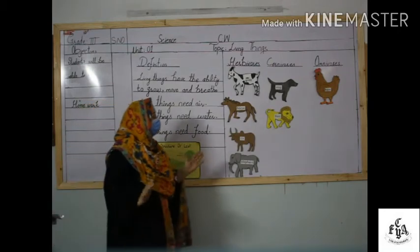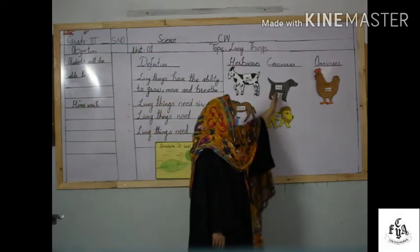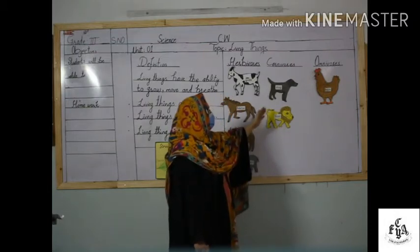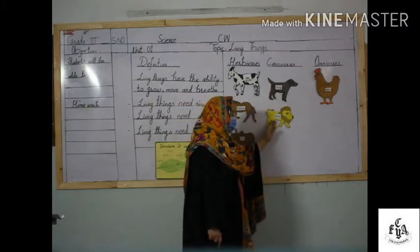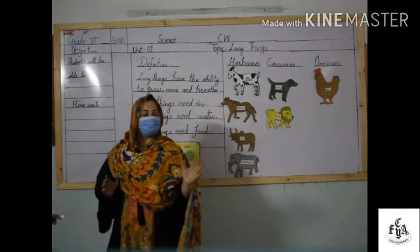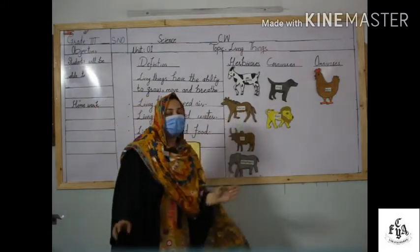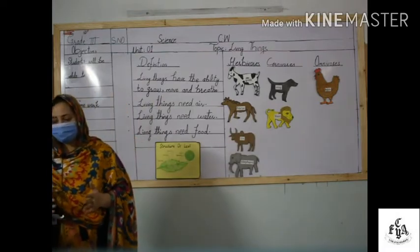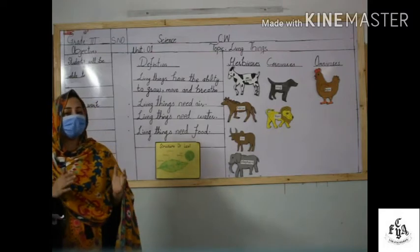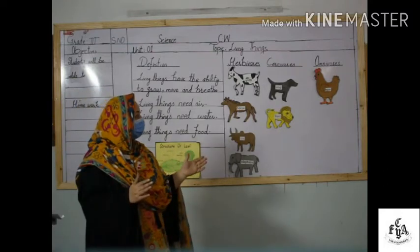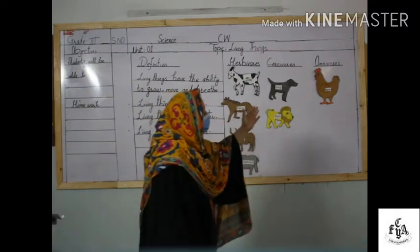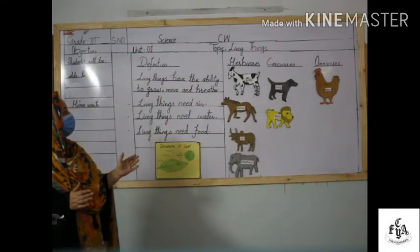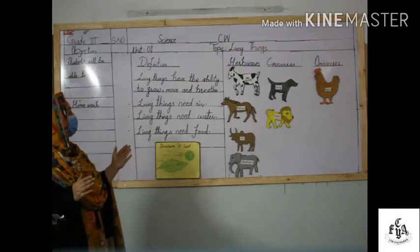Number two: carnivores. Animals that eat the meat of other animals are called carnivores — for example, dogs and lions. Number three: omnivores. Human beings and other animals that eat both plants and animals are called omnivores. This was all about living things, their needs, and their types.